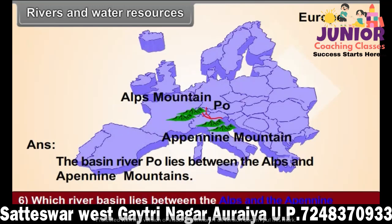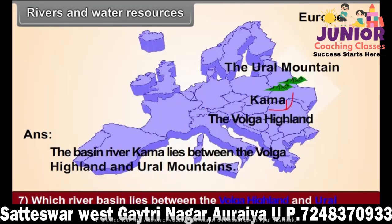Question 9: In the northern part of Europe, a large number of lakes are formed by the work of glaciers. Name any three of them.